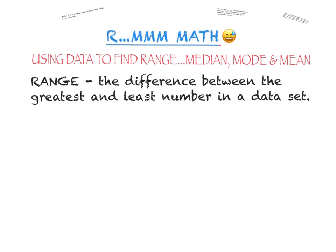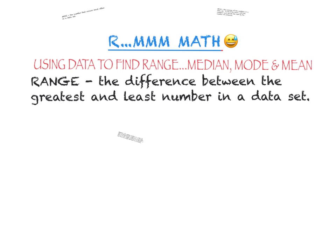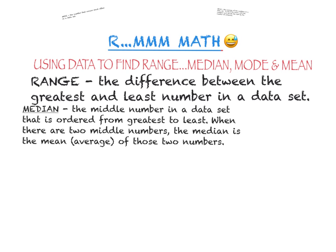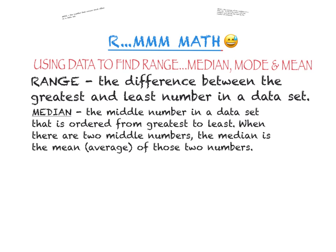The next term that we need to define is median. The median is the middle number in a data set when it's ordered from greatest to least. If you have it all set up to find your range, then it's set up to find your median. Now, if you have an even number of values in your data set, you are going to end up with two numbers in the middle. In order to find your median, you're going to take the average of those two numbers.